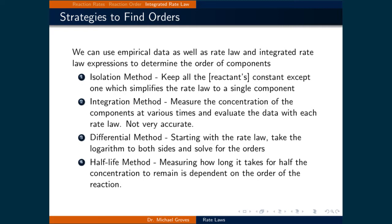Here are four strategies to use previous expressions to empirically find the order of a given reagent. The first is the isolation method, or flooding, where we keep all concentrations of reactants constant except one. This simplifies the rate law to a single component, and we can focus on that single component to determine its order.